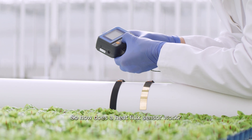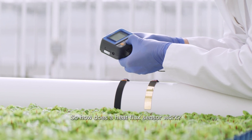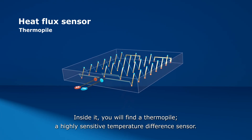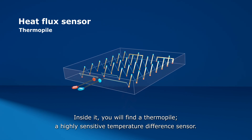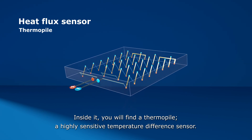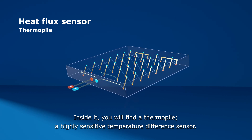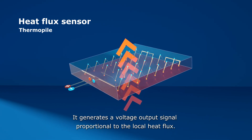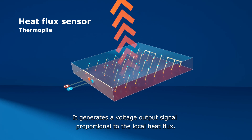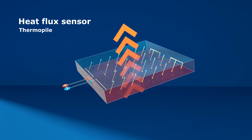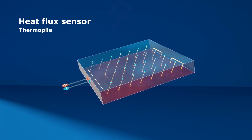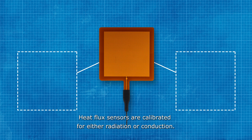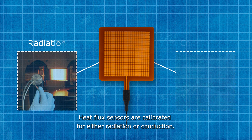How does a heat flux sensor work? Inside it you will find a thermopile — a highly sensitive temperature difference sensor. It generates a voltage output signal proportional to the local heat flux. Heat flux sensors are calibrated for either radiation or conduction.